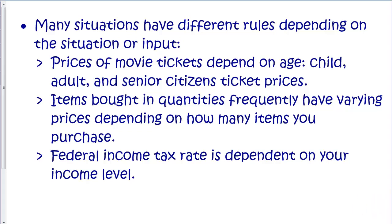There are many situations in regular everyday applications where the rules that define a particular situation depend on what the input is. For example, when you go to the movies to buy tickets, the price you pay depends on age — child tickets, adult tickets, and senior citizen tickets. If you're buying items in quantity, there are frequently discounts for certain quantities, so the price per item varies depending on how many items you purchase. And your federal income tax rate depends on your income level. All these situations where we have different rules for different types of inputs would be modeled by piecewise functions.